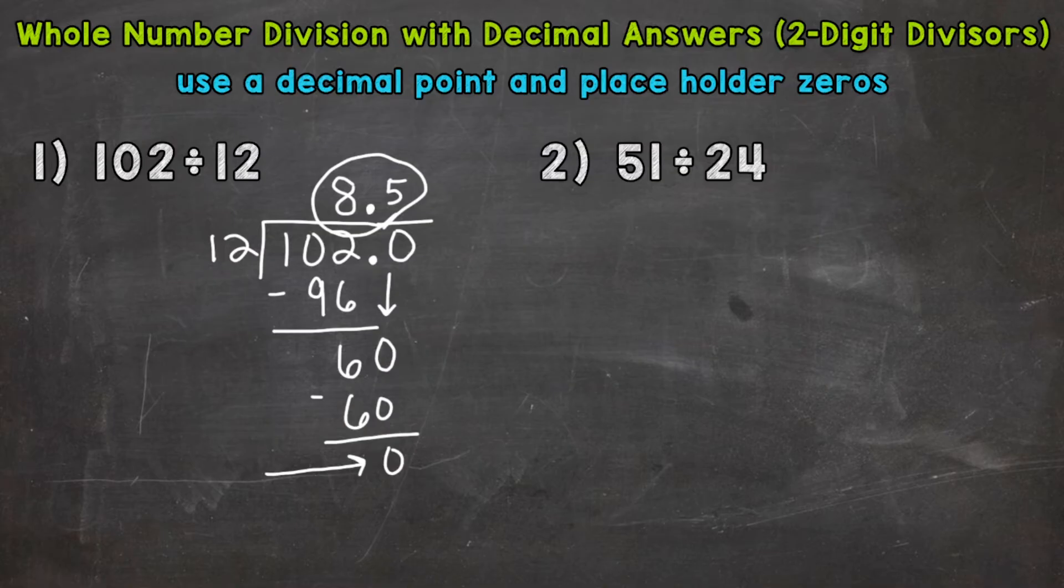So we have 51 divided by 24. We'll start by setting that up. 51 divided by 24. We have the divide step first. 5 divided by 24. How many whole groups of 24 out of 5? We can't do that. So we need to use the 51. How many whole groups of 24 out of 51? 2, because that gets us to 48. So 2 times 24 is 48. Subtract and we get 3.